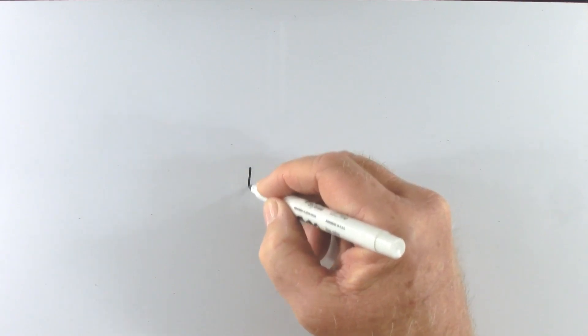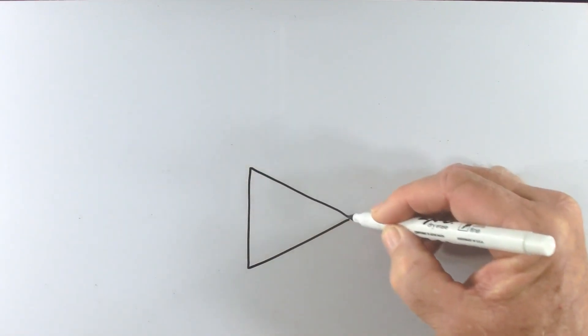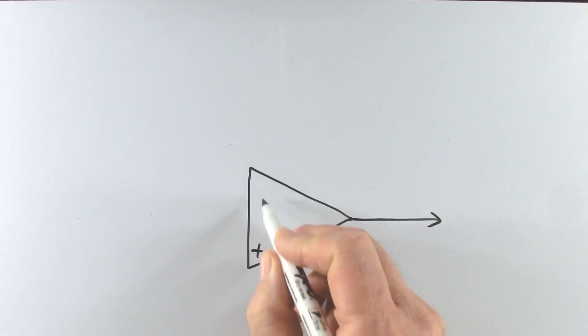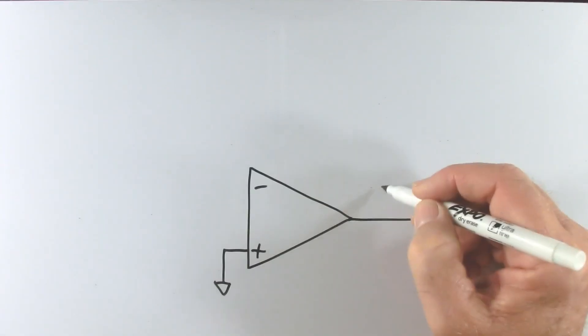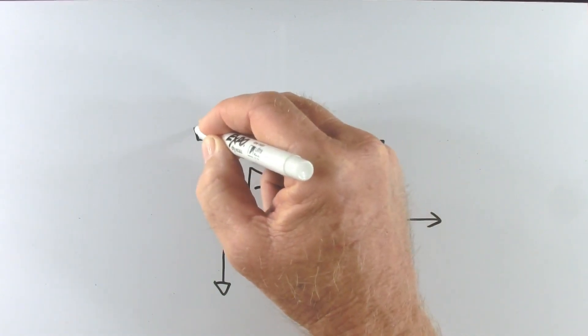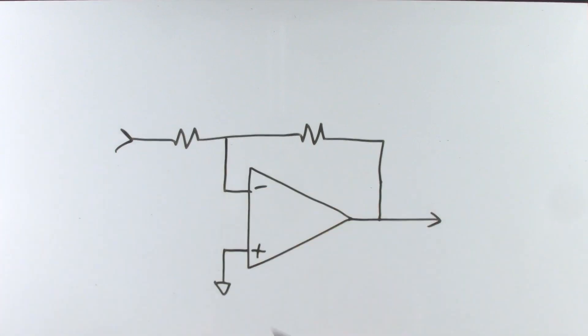In this video we're going to look at the summing amplifier. I will start by drawing an inverting amplifier because the summing amplifier is based on that. There's our output. Non-inverting input goes to ground, feedback resistor,